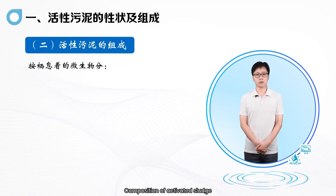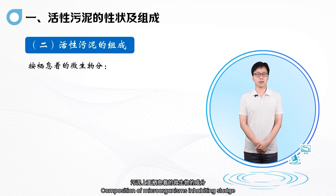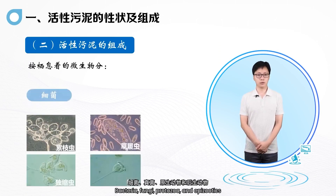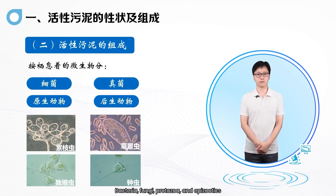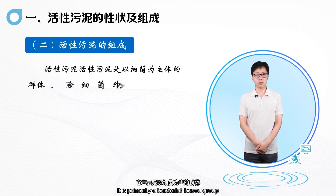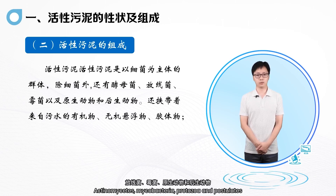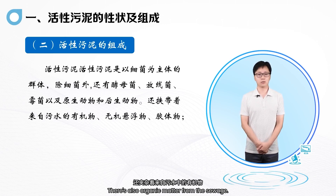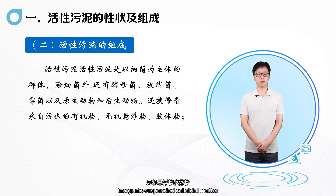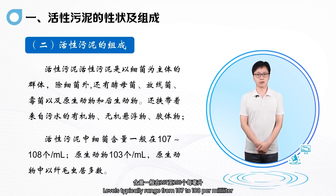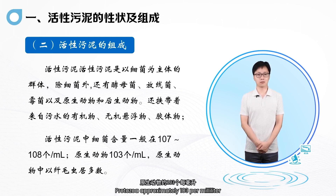Composition of activated sludge: the main microorganisms inhabiting the sludge include bacteria, fungi, protozoa, and epizootics. Activated sludge is primarily a bacterial-based group; aside from bacteria, there are also some yeast, actinomycetes, mycobacteria, protozoa, and postulates, as well as organic matter and inorganic suspended colloidal matter from the sewage. Bacteria in activated sludge typically range from 10^7 to 10^8 per milliliter; protozoa approximately 10^3 per milliliter.